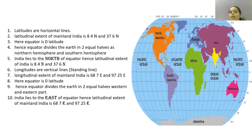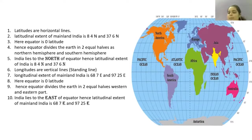So in this slide we have learned what are latitudes and what are longitudes. Latitudes are horizontal lines and longitudes are vertical lines. To get the position of any country on the world map, we use units like 8 degrees 4 minutes North.